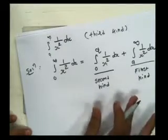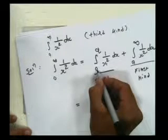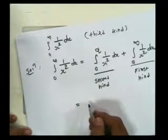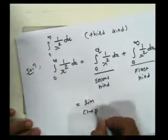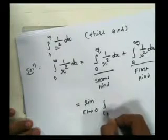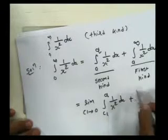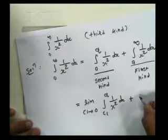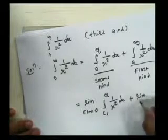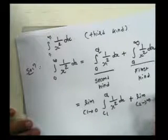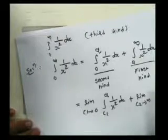We solve using our earlier concept. Since 0 is the point of discontinuity, we replace 0 by some number and write in limit form: limit c1 tends to 0 of integration from c1 to a of 1 upon x squared dx, plus replacing infinity by c2: limit c2 tends to infinity of integration from a to c2 of 1 upon x squared dx.